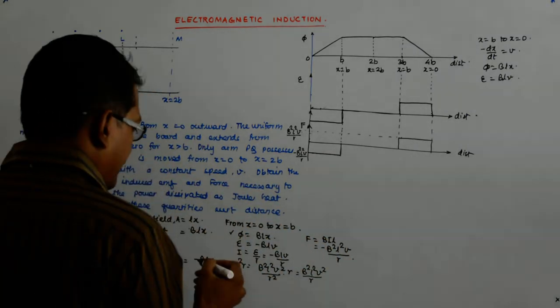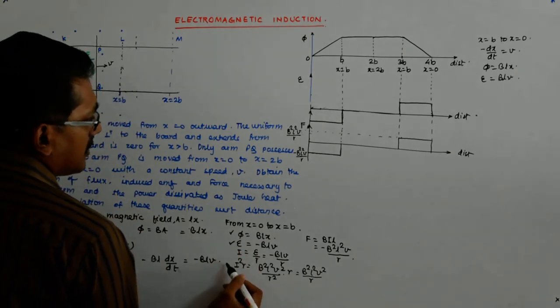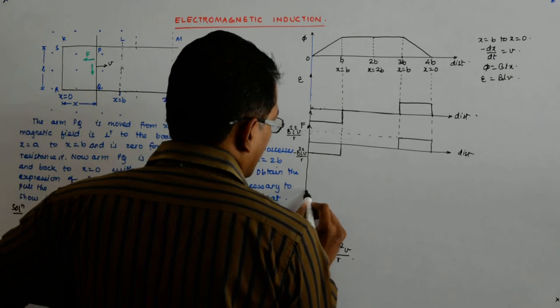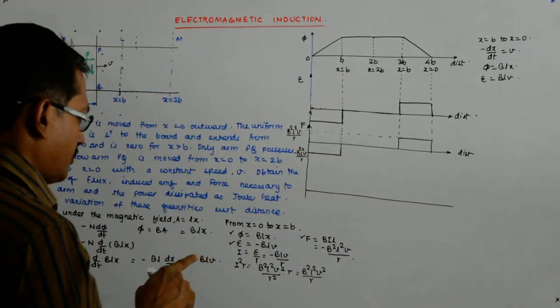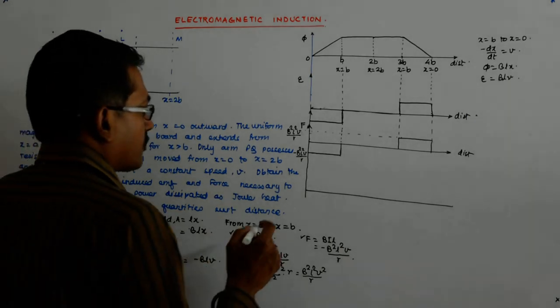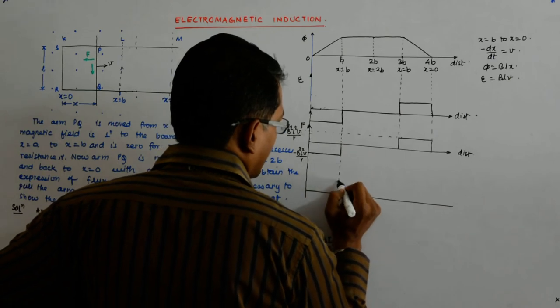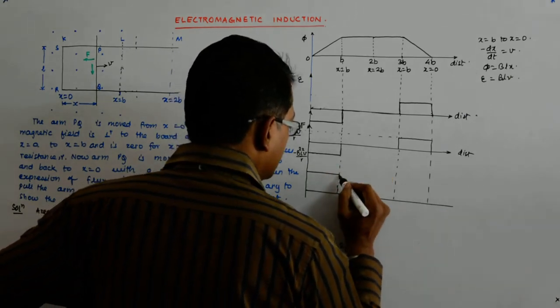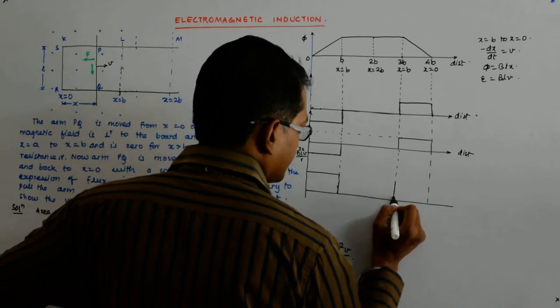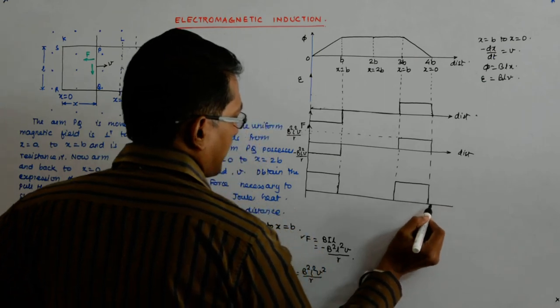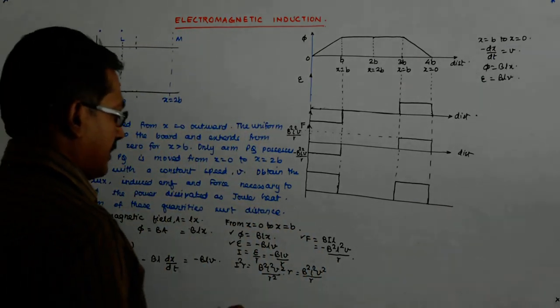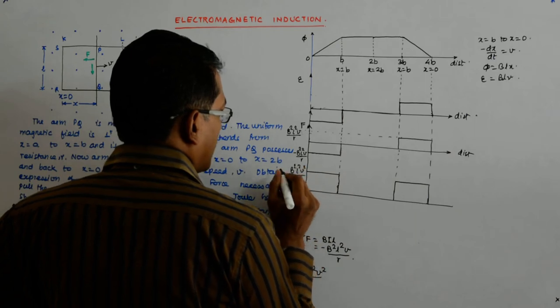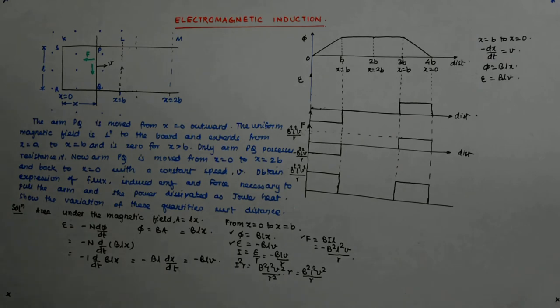So you understand how the force varies. So I have done e, I have done the force, I have to do the joule heating. Now heating does not know in what direction you are going, so it is b square l square v square upon r square. So obviously it will be something like this. And this point being b square l square v square by r. This is your power dissipation.